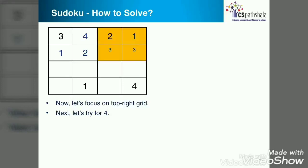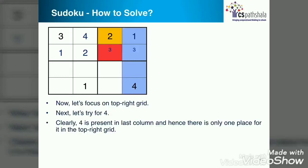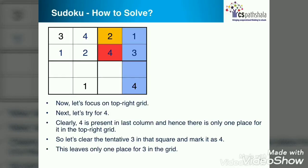Now let's try 4. Is it possible to put 4 in the right hand side blue color column? No. Why not? Because 4 is already present in that row. Therefore the only place possible for 4 is shown in red. So let's clear tentative marks of 3 and put 4. That's it. Now this grid is completed and this mini grid is also complete.